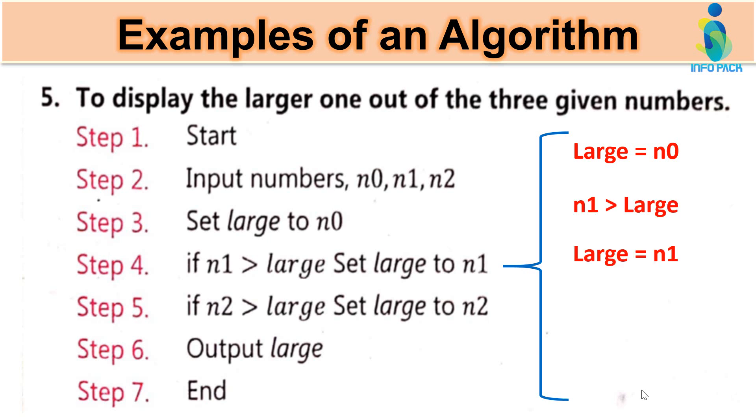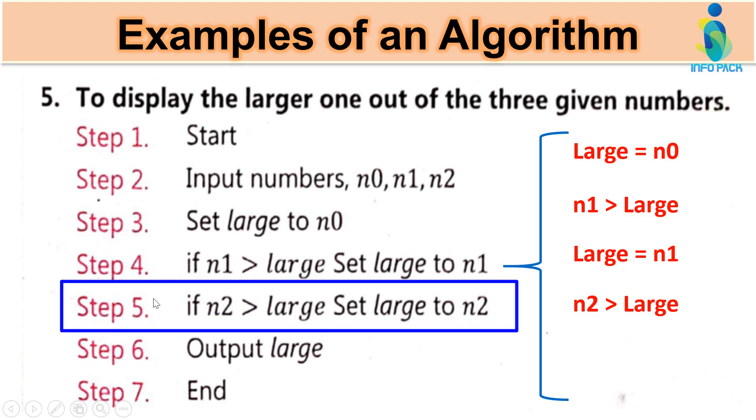Lekin agar aisa nahi hai, then there should be no change. Hum koji change nahi karen ki hum next step pe chalye ga. So step five is, lekin agar yeha condition sahi ho jati hai, n1 greater hai large se, toh hum ne kya kar dhena hai? Large meh n1 ko store kawa diha hai. If condition is false then hum ne kya karna hai? Step five pe jana hai. In step five we have to compare n2 with n0. So large ke inder kya pada ho hai? Large ke inder n0 pada ho hai.